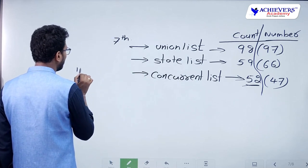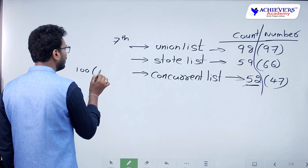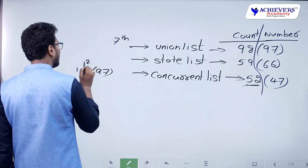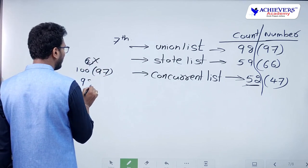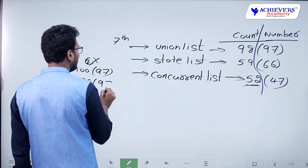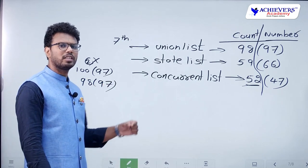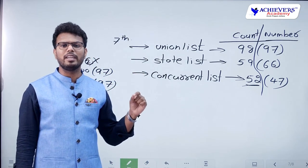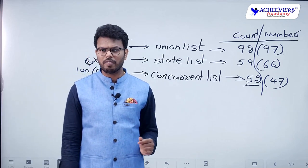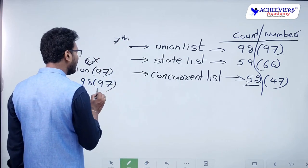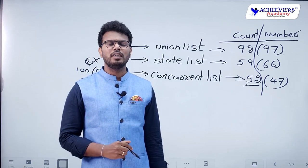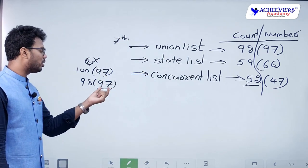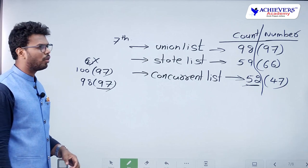Initially the Union List had 100 subjects and the number was 97. After GST, two items were eliminated, so the count became 98 and the number remains 97. This is because some entries are numbered like 92A, 92B, 92C — sub-entries attached to existing numbers — so the count exceeds the highest number. The one extra point is related to entry 92, which is why the count is 98 while the number is 97.